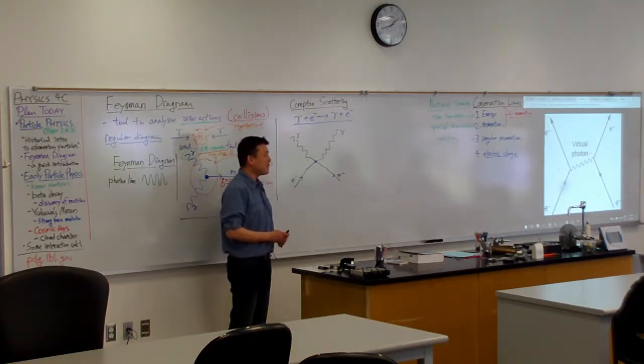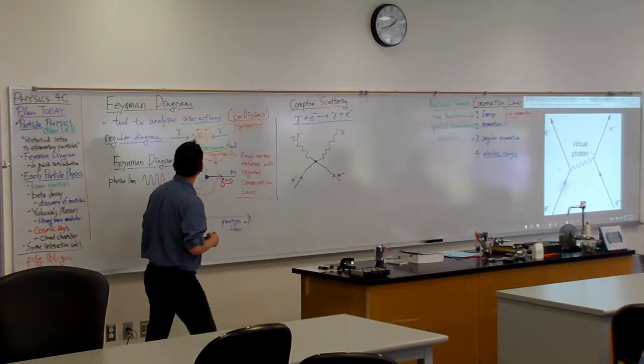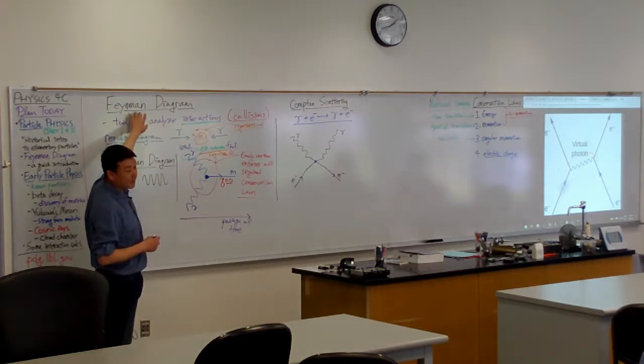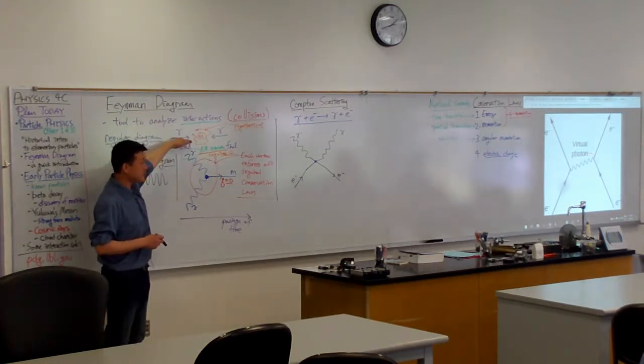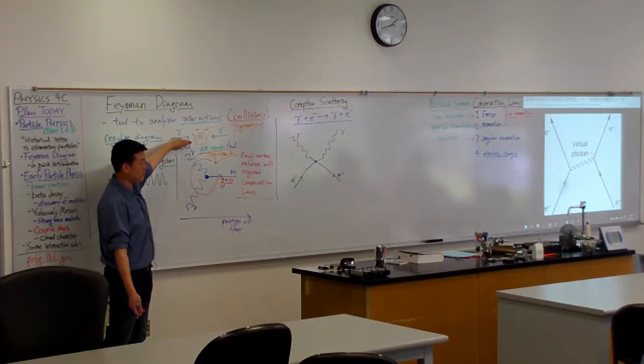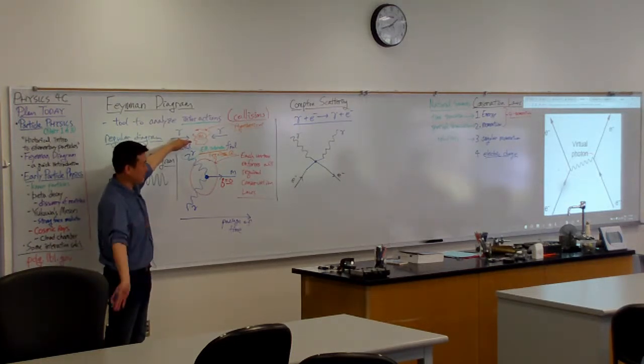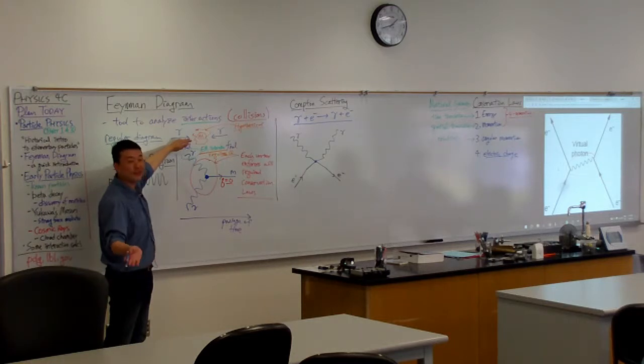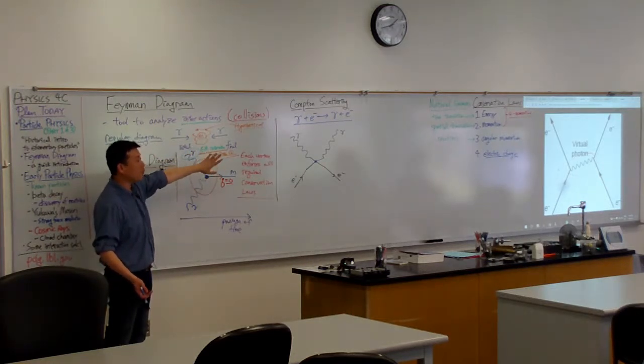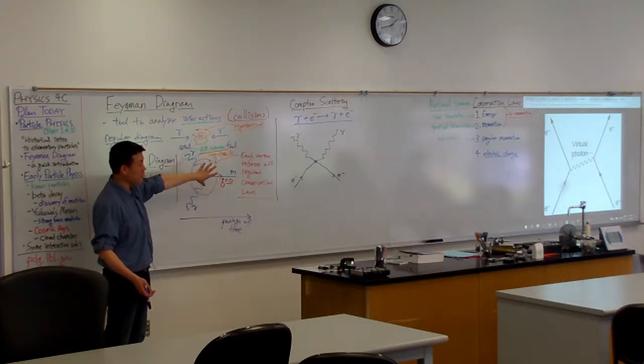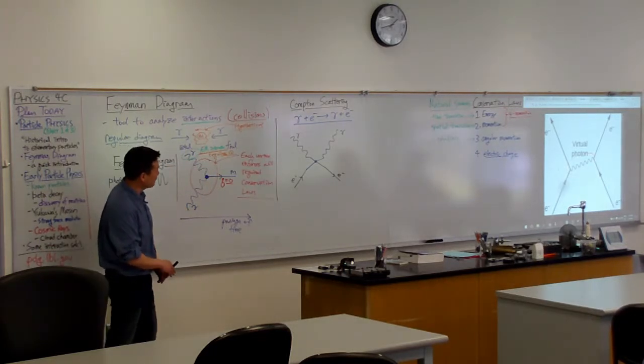But what it is, the Feynman diagram, it's not just a drawing. It's like a free body diagram, there are rules you have to follow because what it is, it's an outline of a calculation you are going to do if you are an actual particle physicist. We are not going to do the calculation part, but because the diagram is a way of organizing the calculation, there are rules you have to follow when you are drawing them.